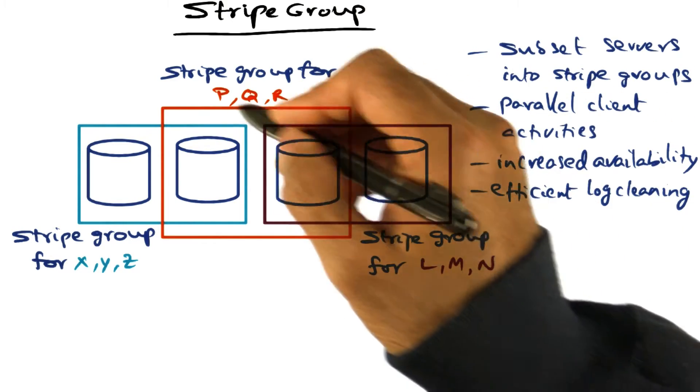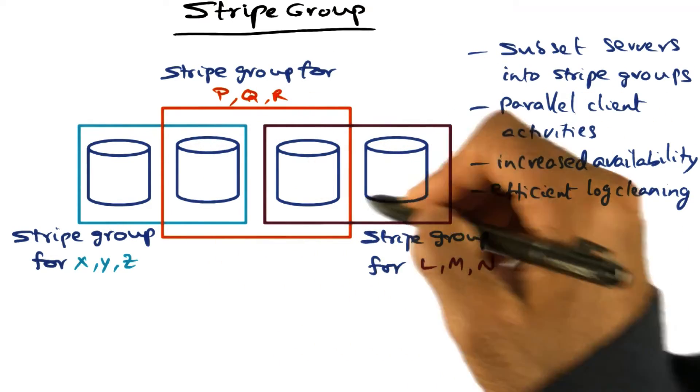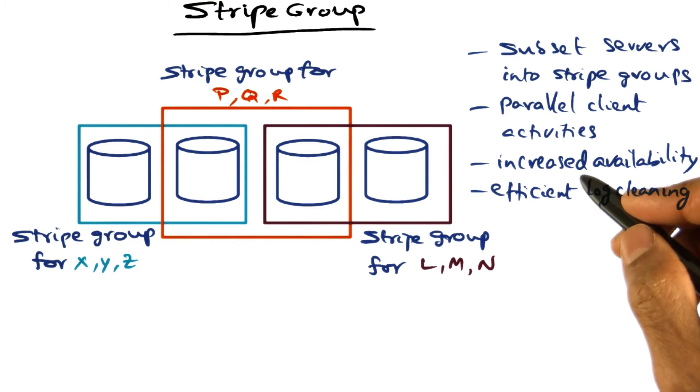And similarly, this activity can go on in parallel with other stripe groups that exist in the system and so on. And so it increases the availability of the server.